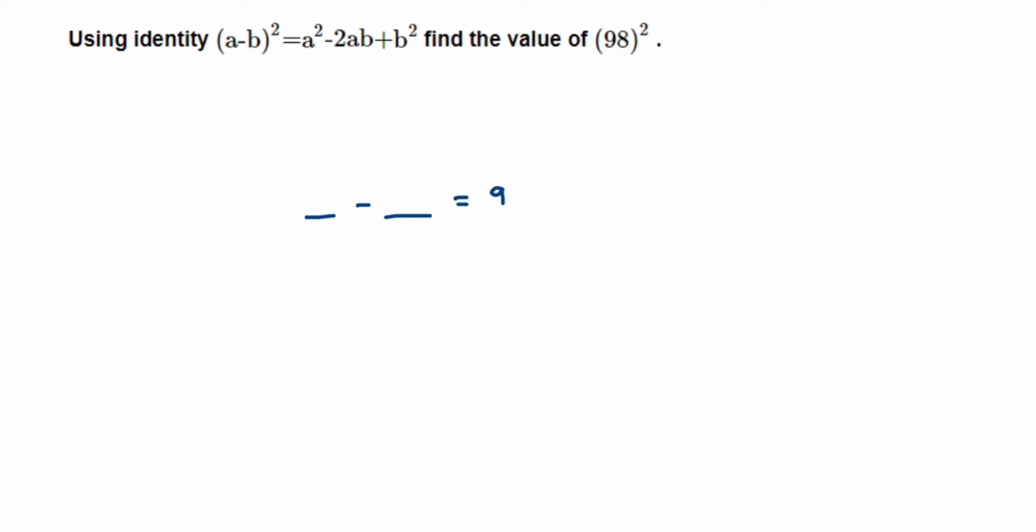The best to take here is 100 - 2, because it's easy to calculate 100 and 200 is easy to multiply, and 2 is also easy to calculate. So we're going to take 100 - 2 = 98.